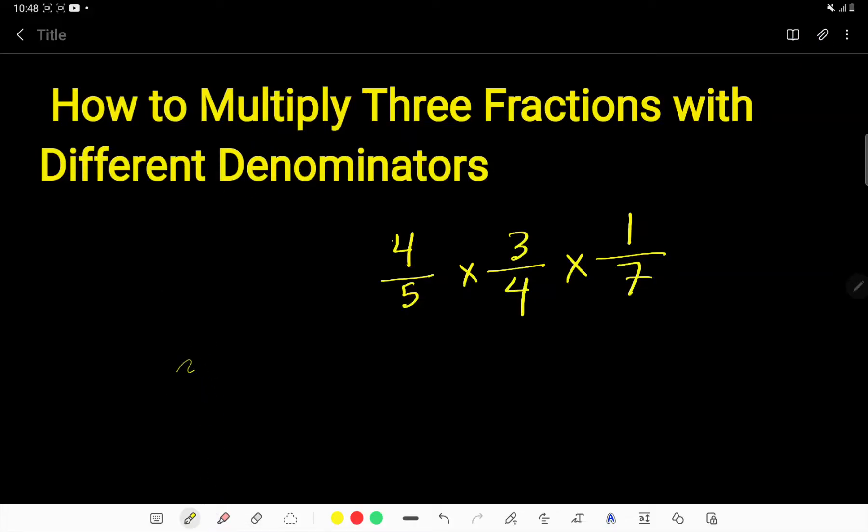How to multiply three fractions with different denominators. This is the first fraction, this is the second fraction, and this is the third fraction. Here the denominator is 5, we have 4 here, and 7. All are different.